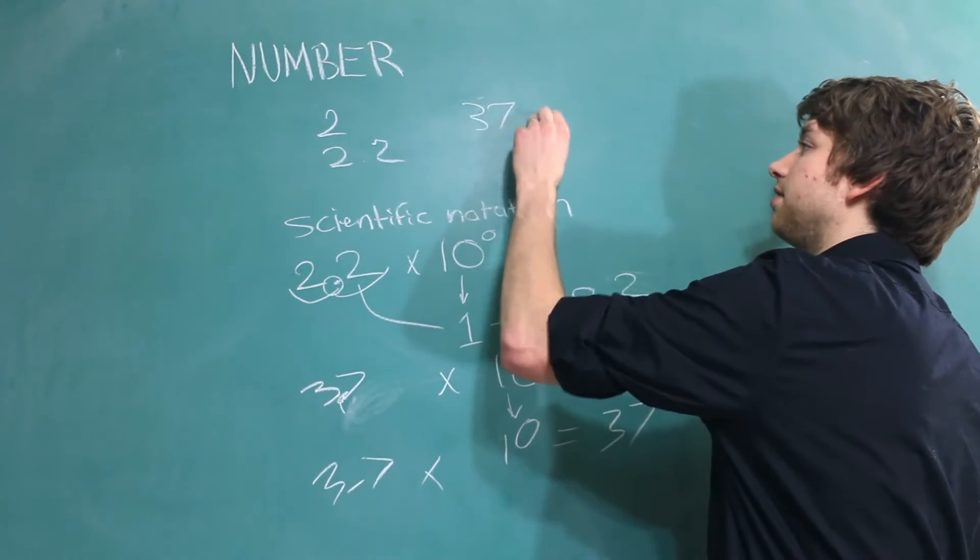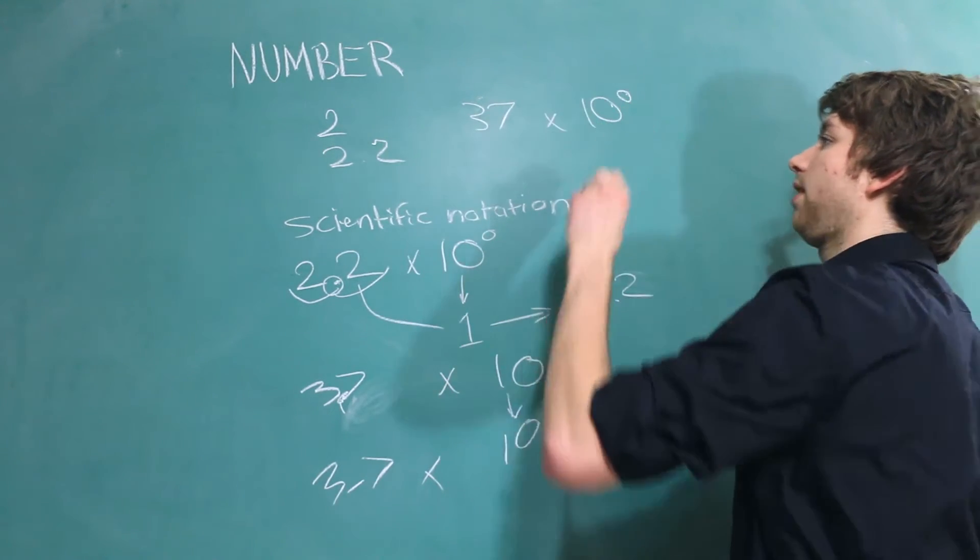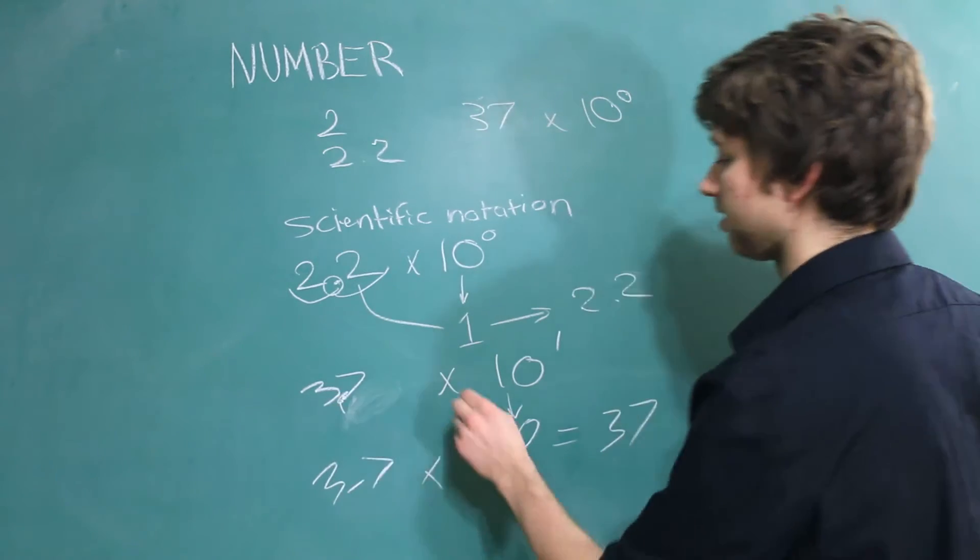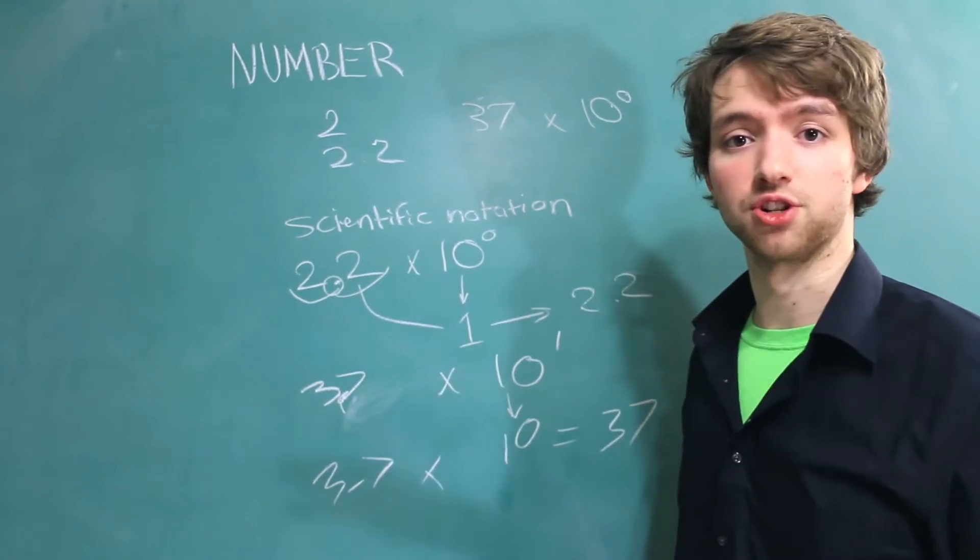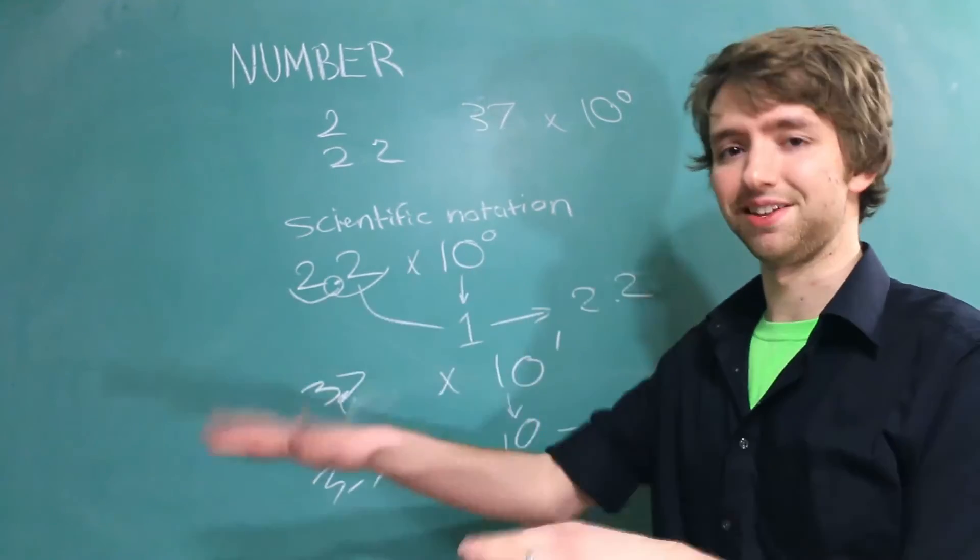Either 37 times 10 to the 0th or 3.7 times 10 to the 1st. Now we really don't have to worry a whole lot about the scientific notation part of this. That's all done behind the scenes. So what we need to worry about is significant digits.